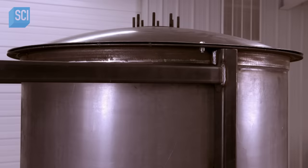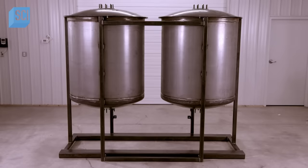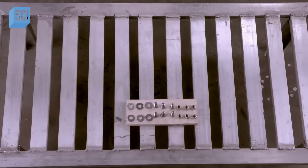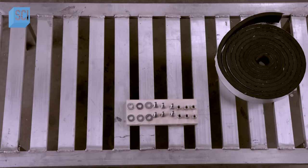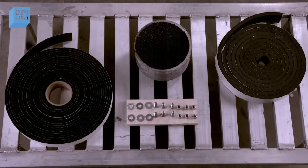The vessels go to the paint booth for a coat of powder paint, then into an oven to bake the paint. When they come out, they're ready to be filled with carbon pellets and sealed.